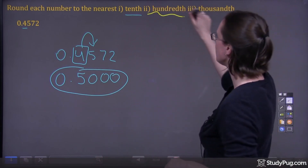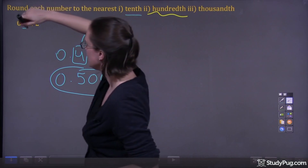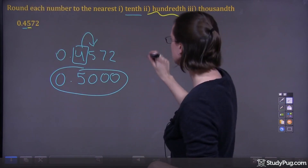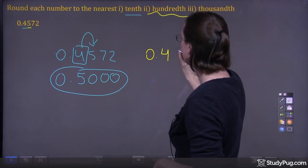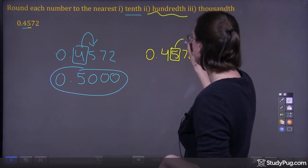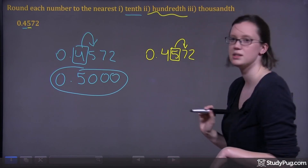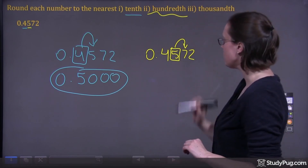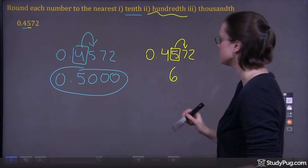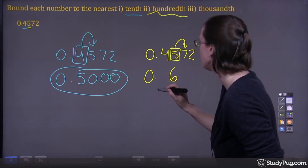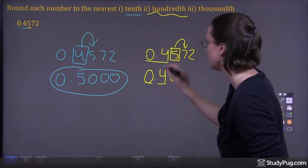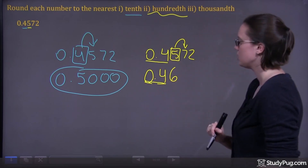Now we're going to round to the nearest hundredth. So our hundredth position is two over from our decimal point. If we put a box around our hundredth position and look one to the right, we can see that that's a seven. Since it's a seven, the five is going to become one bigger — so it's going to become a six. And what's in front of that rounded number stays the same: zero, decimal, four. So that stays the same.